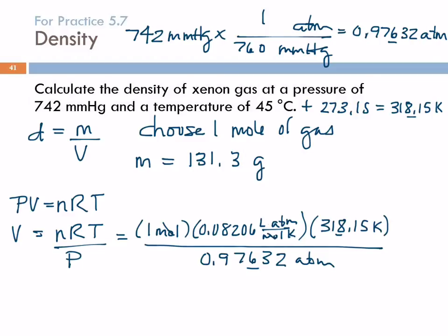Moles cancel, atmospheres cancel, kelvins cancel. 0.08206 times 318.15, divided by 0.97632, 26.741 liters. At this point, in a problem like this, you kind of feel a little dazed, and you're like, wait a minute, I just found a volume, but I was doing density. Oh yeah, that's right. I needed the volume to plug in there. Sometimes you forget where you were going with that. If that happens to you a lot, make notes to yourself.